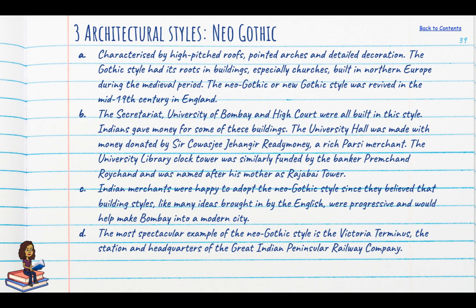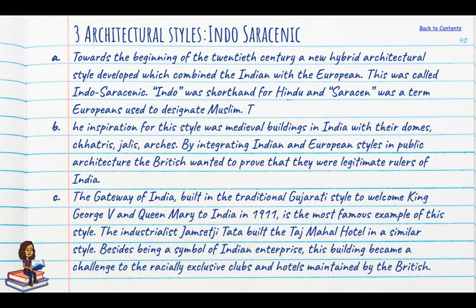Indian merchants were happy to adopt neo-gothic styles, believing that building styles, like many other ideas brought in by the English, were progressive and would help make Bombay a modern city. The most spectacular example of the gothic style is the Victoria Terminus, headquarters of the Great Indian Peninsula Railway Company. The third style was the Indo-Saracenic — actually the Indo-Islamic style — characterised by domes, chhatris, jalis and arches from medieval Indian buildings. The Gateway of India, built in traditional Gujarati style to welcome King George V and Queen Mary in 1911, is a famous example. Industrialist Jamsetji Tata built the Taj Mahal Hotel in a similar style.